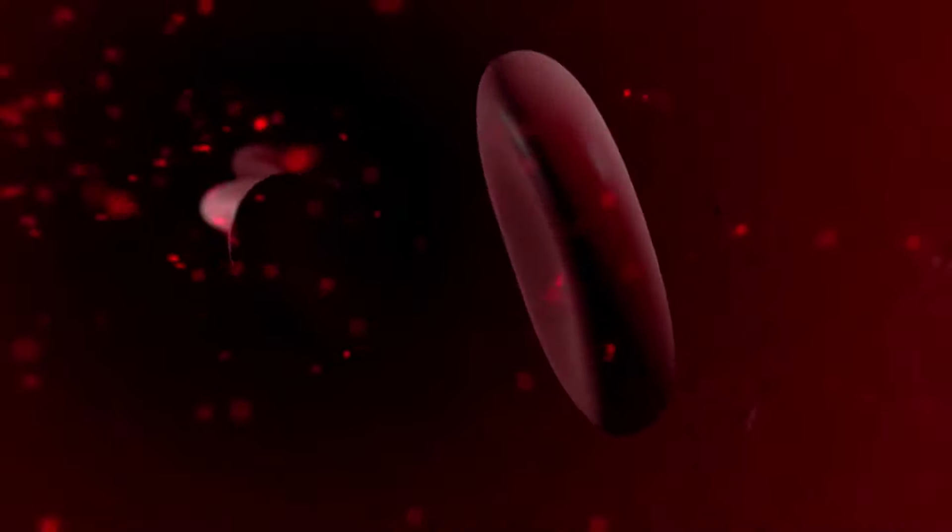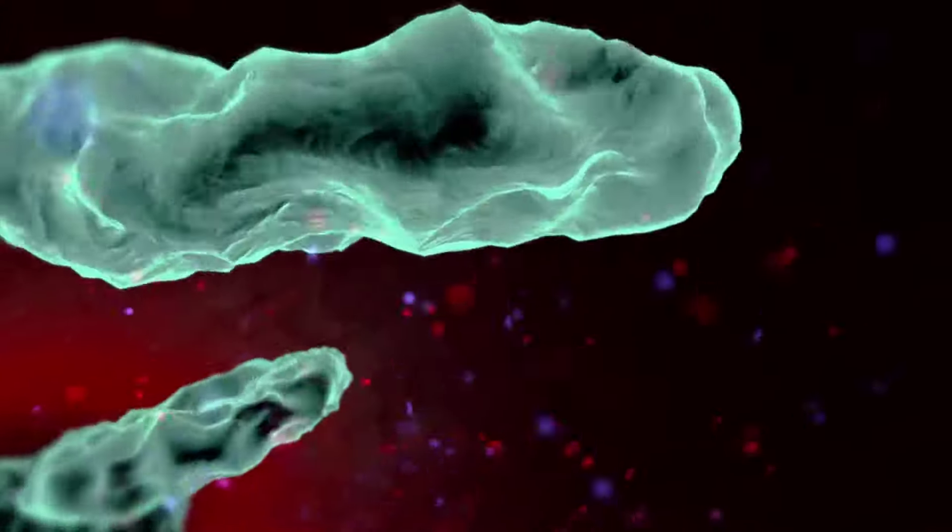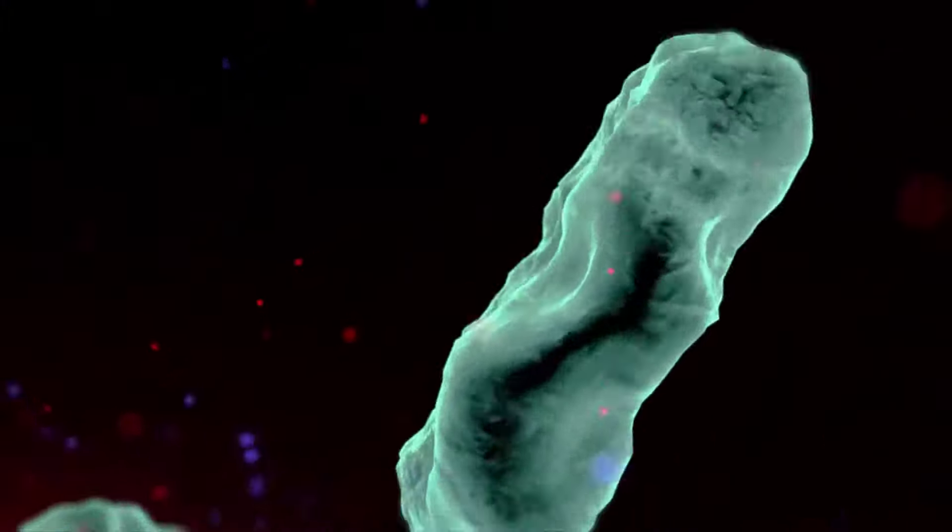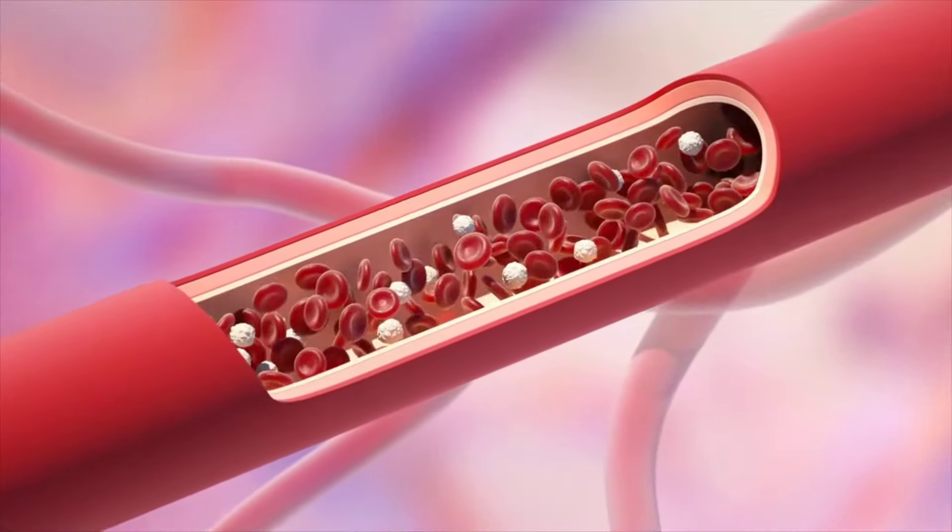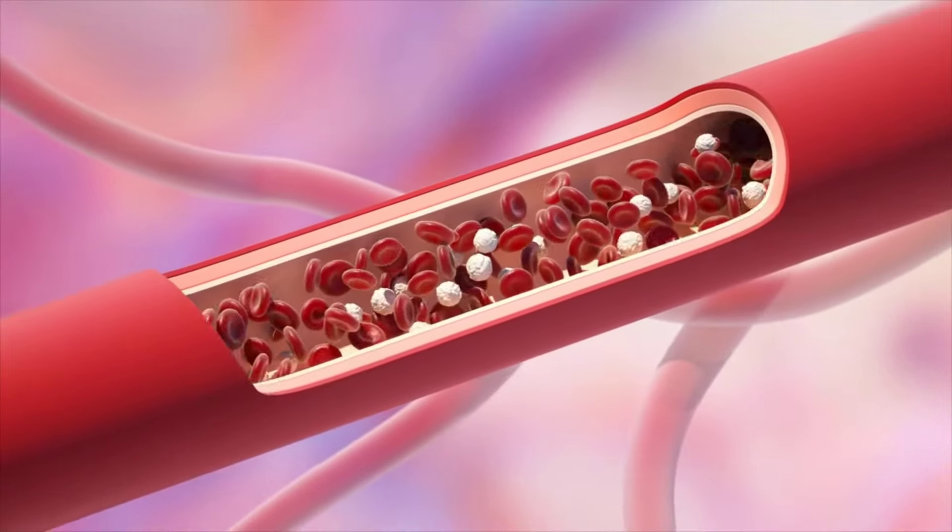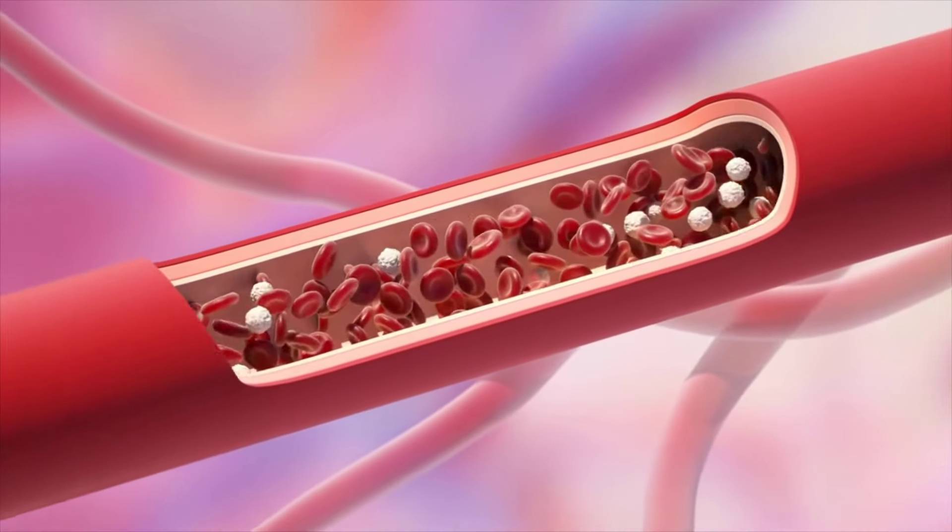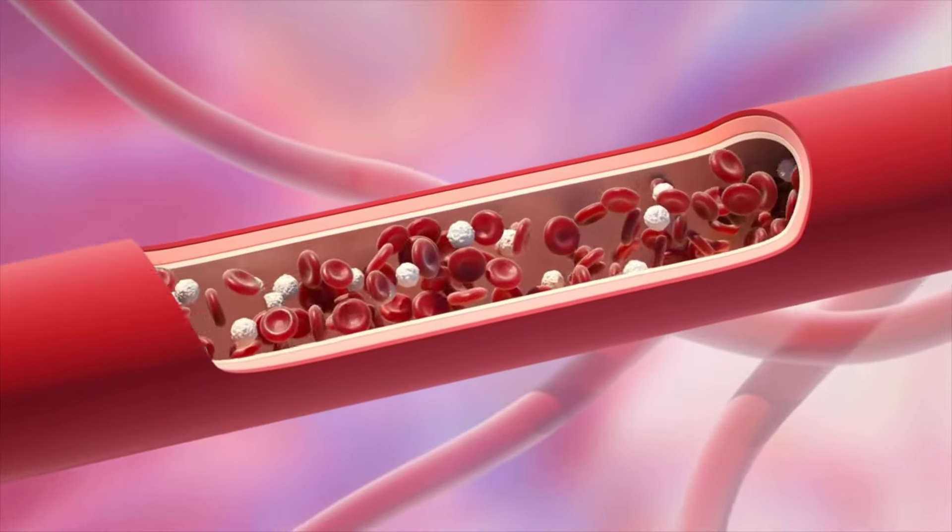The endothelium lining of local blood vessels becomes leaky under the influence of histamine and other inflammatory mediators. These leaky vessels allow neutrophils, macrophages, and fluid to move from the blood into the spaces of interstitial tissues.